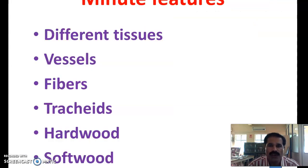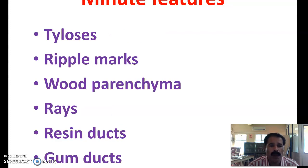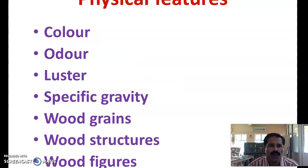Then the minor features of wood include different tissues like simple tissues, complex tissues, vessels, fibers, tracheids, hardwood, and softwood. These are the minor features of wood. And also tyloses, ripple marks, wood parenchyma, rays, ray ducts, and gums — these are all the minor features of wood.